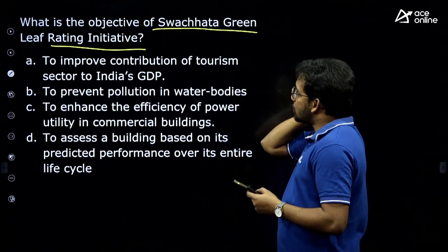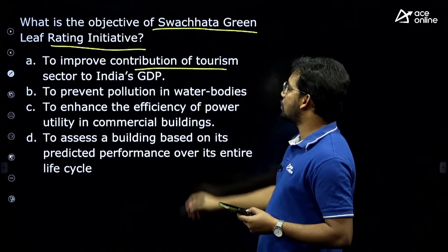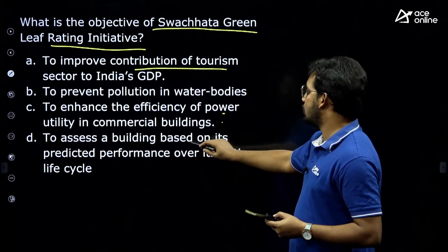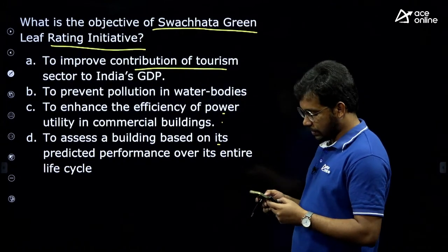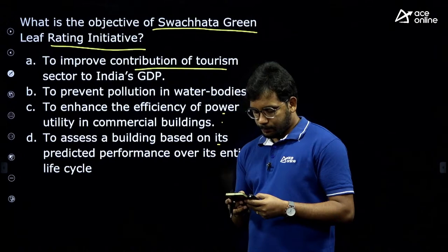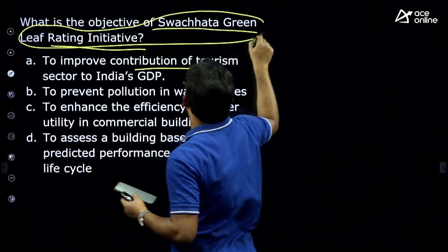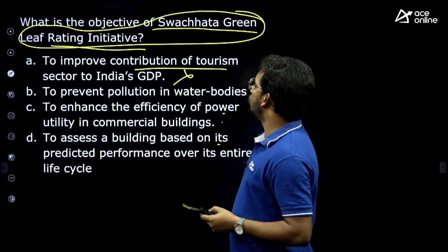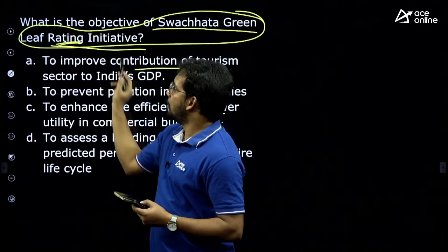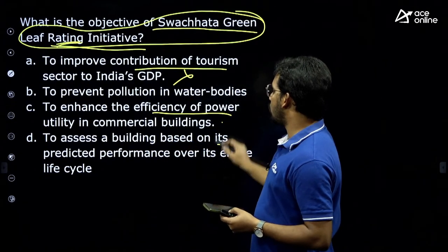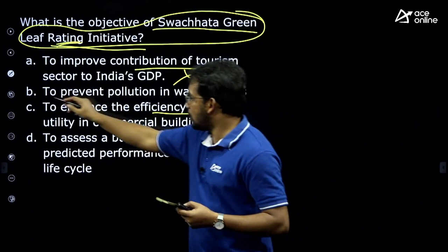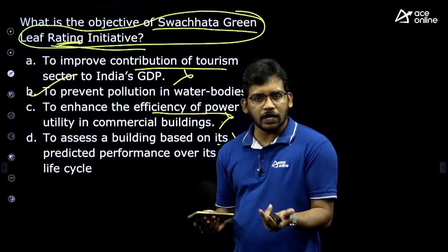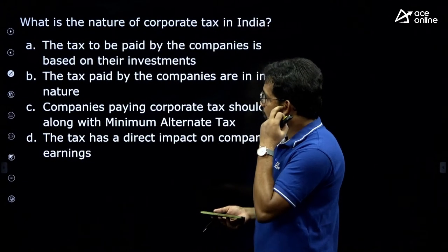Question 2: What is the objective of Swachata Green Leaf Rating Initiative? A) To improve contribution of tourism sector to GDP. B) To prevent pollution in water bodies. C) To enhance efficiency of power utility in commercial buildings. D) To assess a building based on its predicted performance over its entire life cycle. The answer is B — to prevent pollution in water bodies, promoting clean drinking water at tourist hospitality facilities.